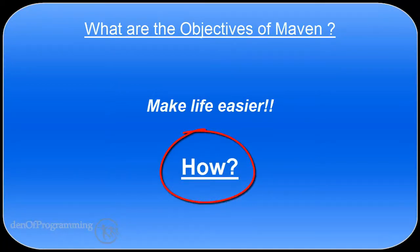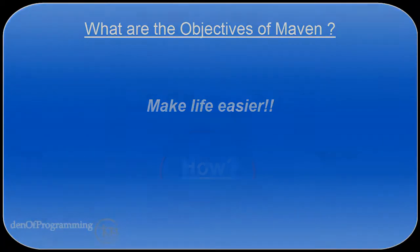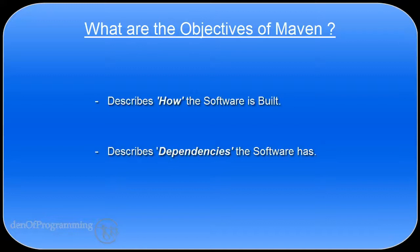But how does it do that? Firstly, Maven tries to make the build process easy. Maven provides a lot of shielding from the underlying detail of the build process and it really tries to address two aspects of software building. The first is it describes how the software itself is built, and secondly it describes the dependencies the software actually has.